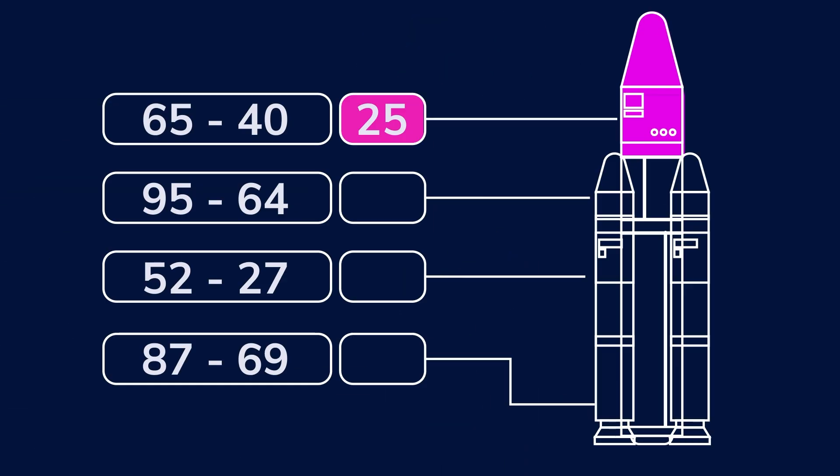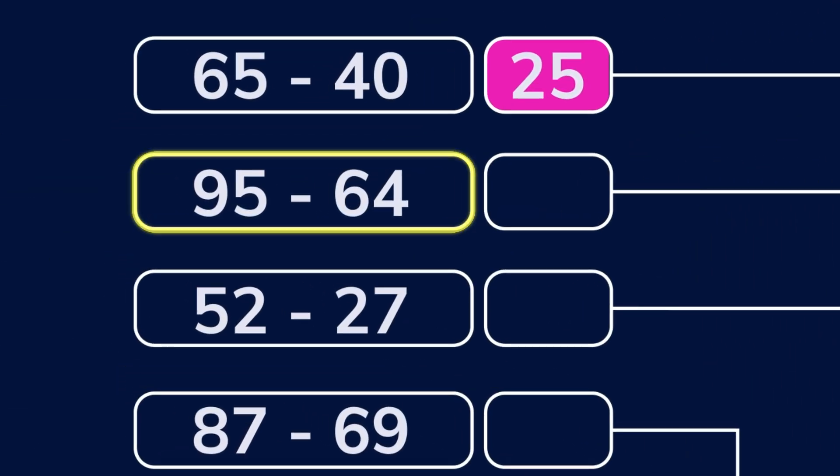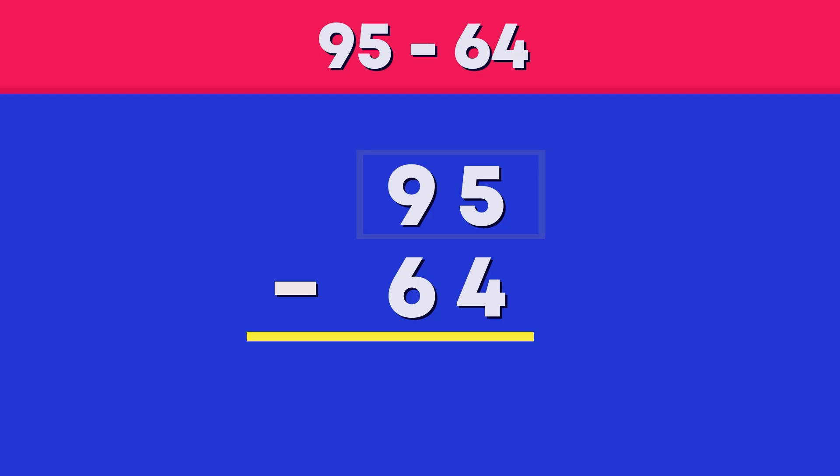The next code number is 95 minus 64. When subtracting two-digit numbers, it helps to split each number into tens and ones. We begin by splitting 95.